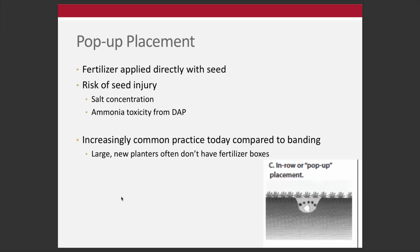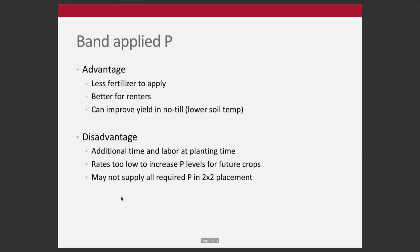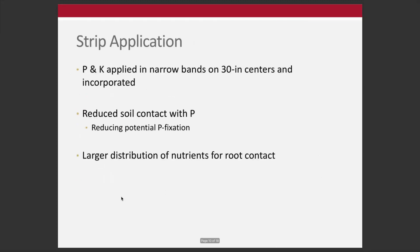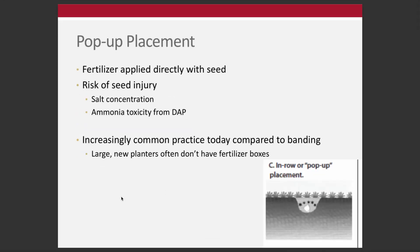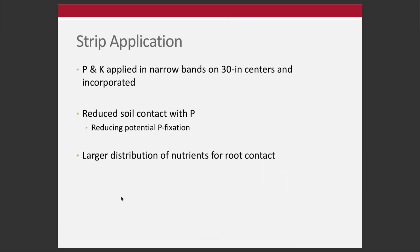It's increasingly common with new and larger planters that don't have fertilizer boxes to pull a liquid tank of 10-34-0 and do an in-furrow or pop-up application directly on the seed. It can work fine, but it's certainly not the most ideal. Studies over the last 20 years have consistently shown a better yield response when phosphorus is put in a 2x2 band compared to an in-furrow or pop-up application.